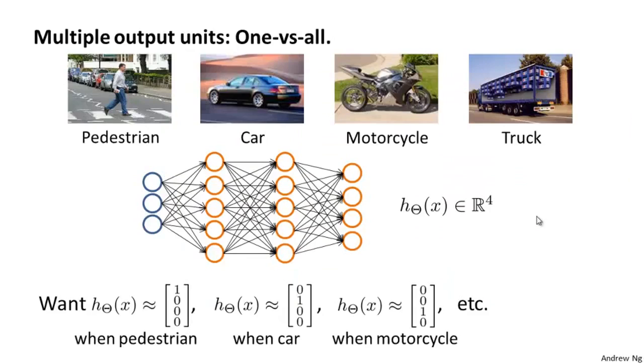The way we do multi-class classification in a neural network is essentially an extension of the one versus all method. So let's say that we have a computer vision example, where instead of just trying to recognize cars, as in the original example that I started off with, but let's say that we're trying to recognize...